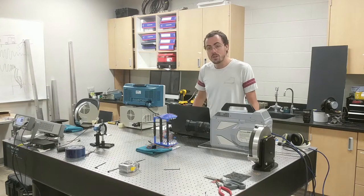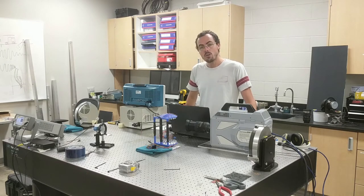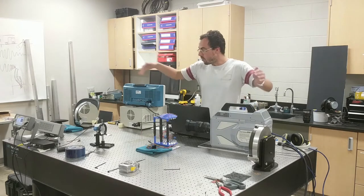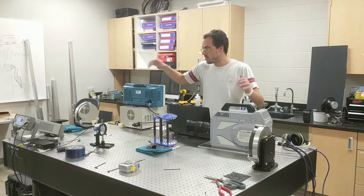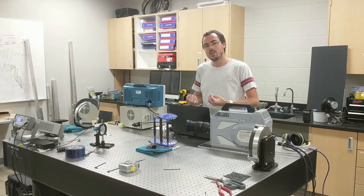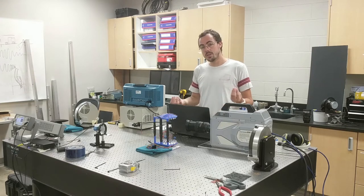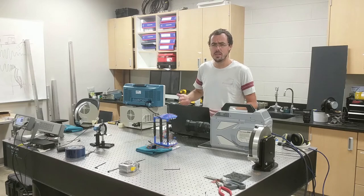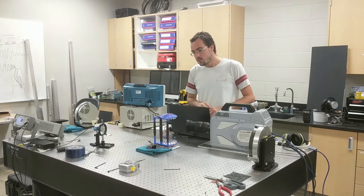Okay. So this is what's called a shadowgraph. And a shadowgraph is an optical apparatus, an optical setup. This is one type, the Z-type shadowgraph, that is able to visualize disturbances in air density or more specifically in index of refraction.